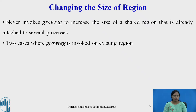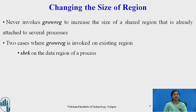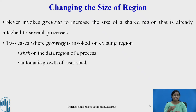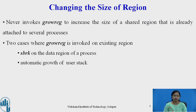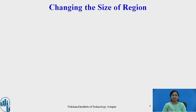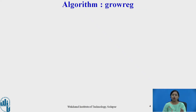There are two cases where grow region can be invoked on an existing region. The first case is SBRK on the data region of a process — if a process has a data region, it can invoke the SBRK system call on it. The second case is whenever there is automatic growth of a user stack. In both cases, data and stack regions are private regions, so grow region algorithm can be invoked on these two regions.